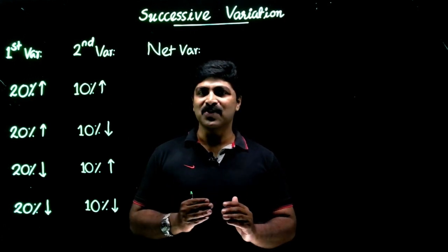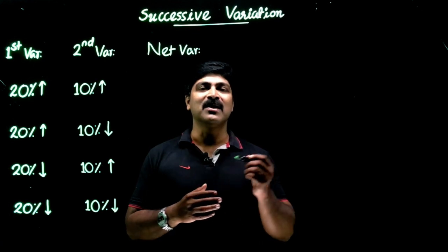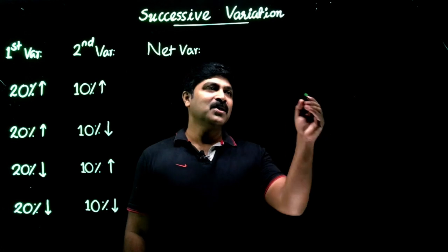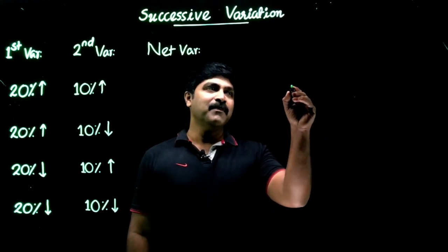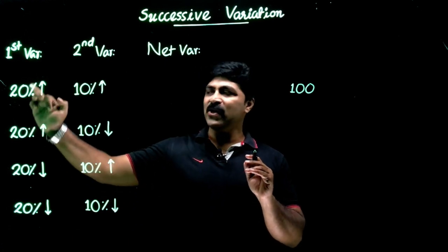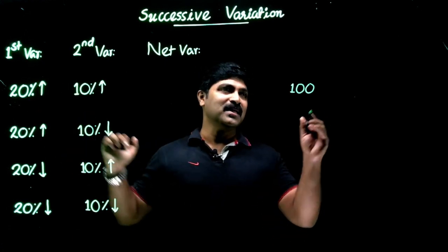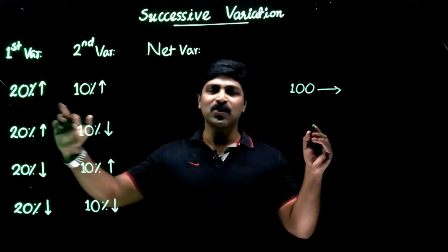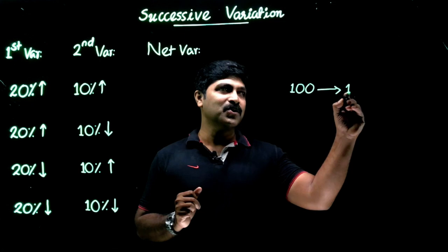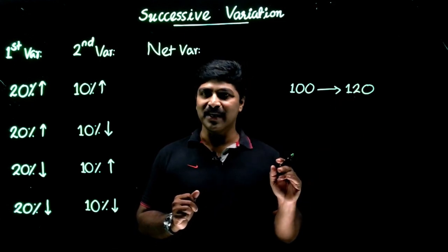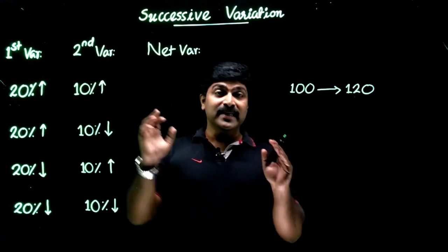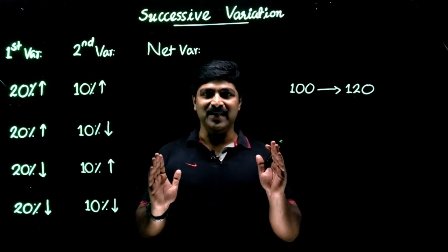How can we tackle this situation? We consider an assumed starting value to easily catch the net variation. Here we are starting with a basic value of 100. The first quantity is increased by 20%, so 100 increased by 20% gives us 20, hence it becomes 120. Further, it's increased by 10% — this is the actual trick of successive variation.